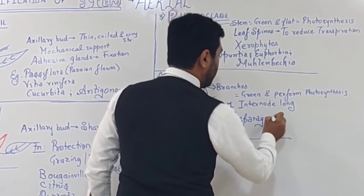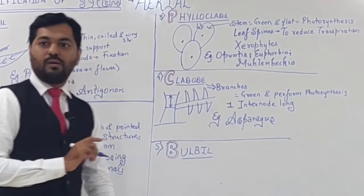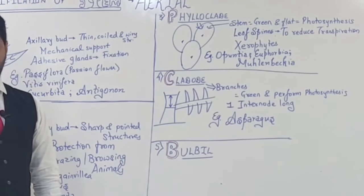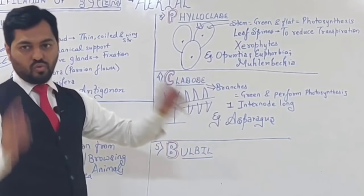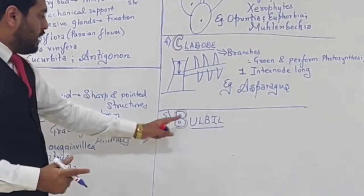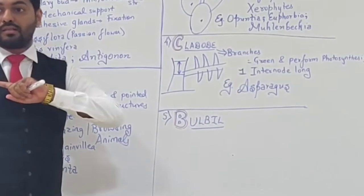Example of plants showing cladode is Asparagus. We discussed Asparagus earlier with fasciculated tuberous roots in Dahlia. Asparagus also shows cladode, so this correlation should be remembered for NEET exams.